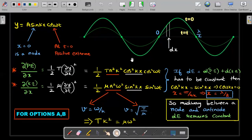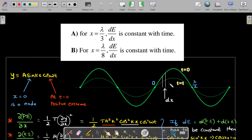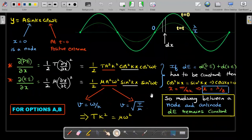The only variations in dP and dK are due to space and time functions. For options A and B, he's asking where dE/dx is constant with time. In each dx window, there's one where the total energy remains constant. Let's search whether it exists at lambda by three, lambda by eight, both, or none.